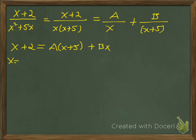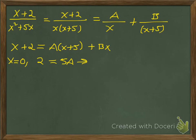We're going to pick certain values for x to find A and B. If I let x equal 0, the left-hand side is 2. The right-hand side is (0+5) times A, which is 5A, and the Bx term is 0. Dividing both sides by 5 gives us A equals 2/5.